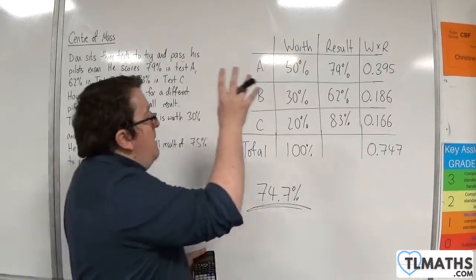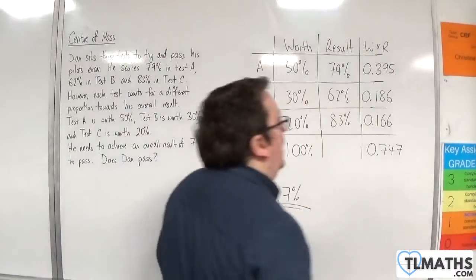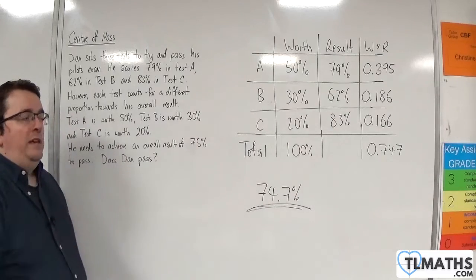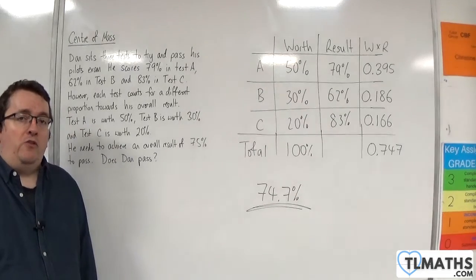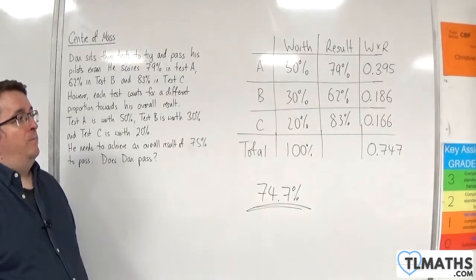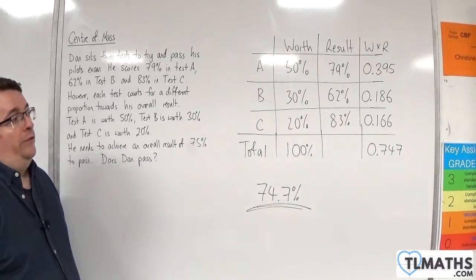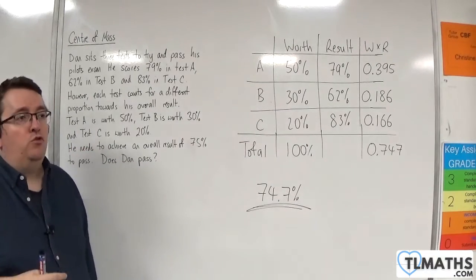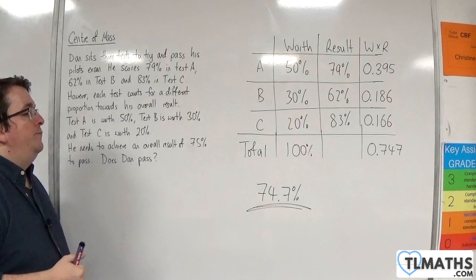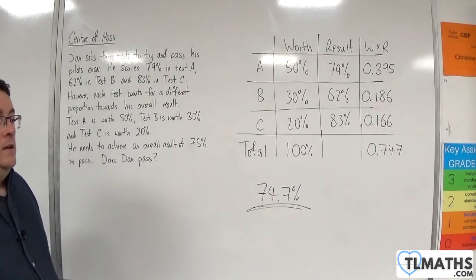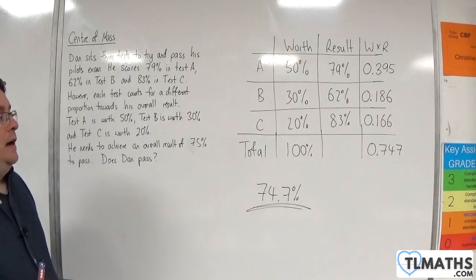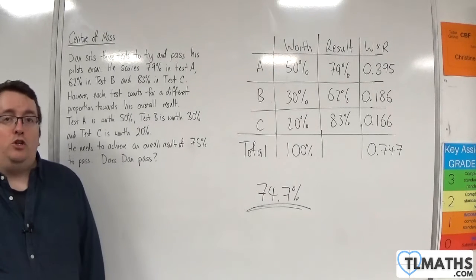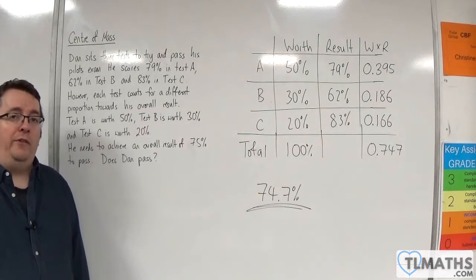But it is this method of finding a weighted average, which we will utilise to find the centre of mass of compound shapes. So they might be rectangles with rectangles, or it might be with triangles, or it could be semicircles. So we'll be dealing with all sorts of different shapes. And we'll also do some 3D shapes as well as part of this section.